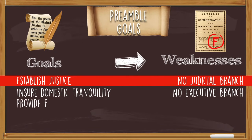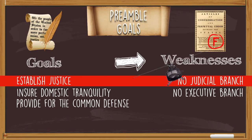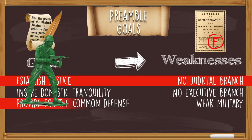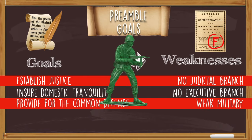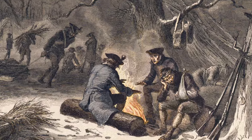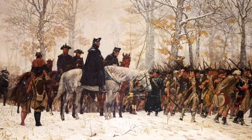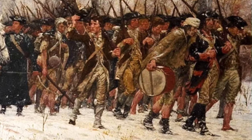Next we have 'provide for the common defense.' That should be a goal of every country — to provide a military to protect the people. Under the Articles of Confederation, we couldn't afford to pay a military because we couldn't collect taxes. This is why we see depictions of the military during the Revolution as being poor, cold, and hungry all the time. Because they were.